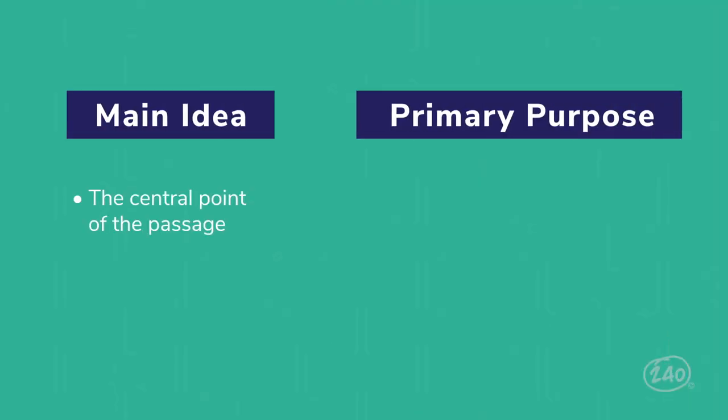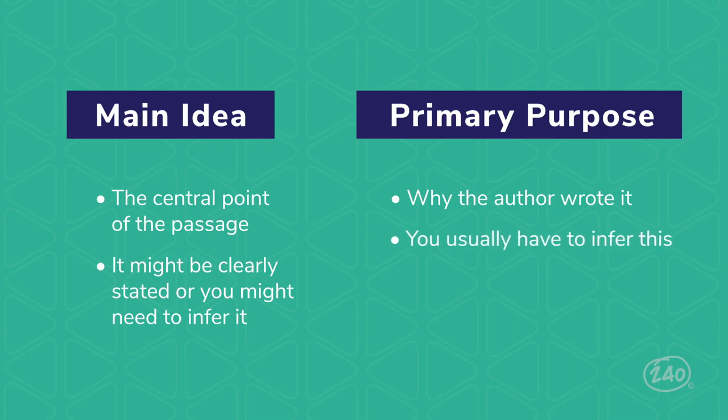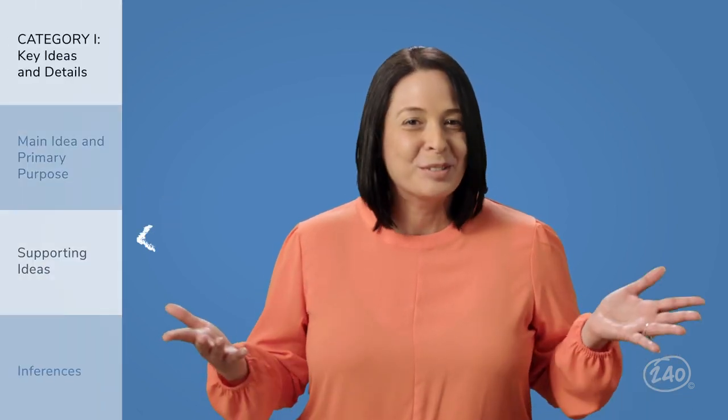A main idea is the central point of the passage — it might be clearly stated or you might need to infer it. A primary purpose is why the author wrote the work; you often have to infer this. You'll definitely see questions that ask you about this directly, but for every passage it's usually the best first step. Determining the main idea and primary purpose will help you fully analyze the text and prepare you to answer other types of questions about it, like questions about supporting ideas.